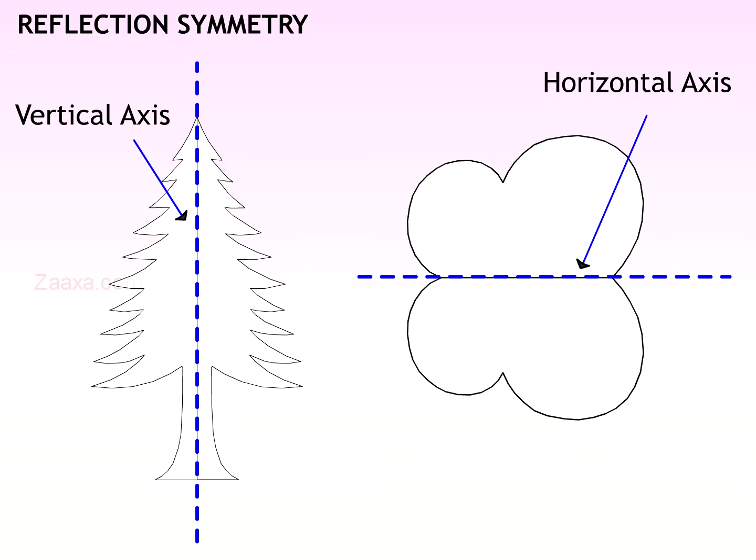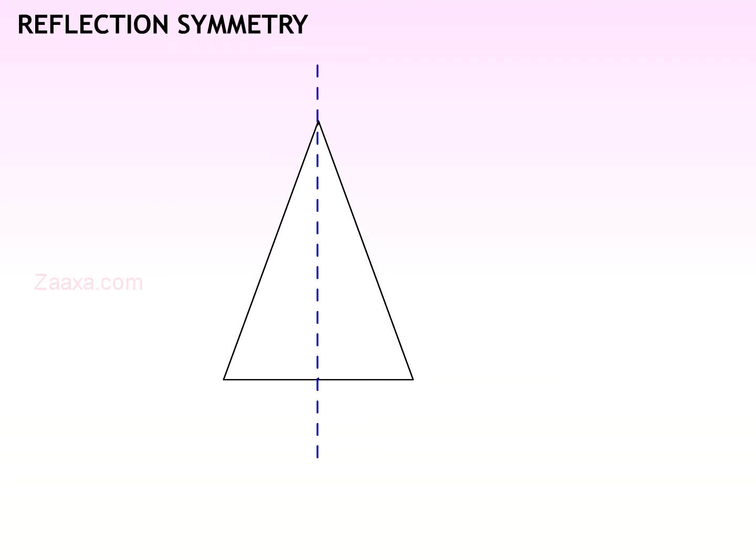An isosceles triangle has one axis of symmetry. Note that when the isosceles triangle is folded along the axis, one half matches the other half exactly.